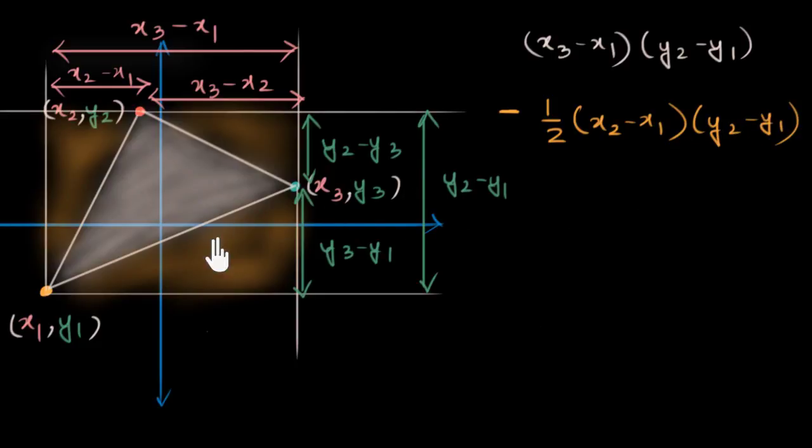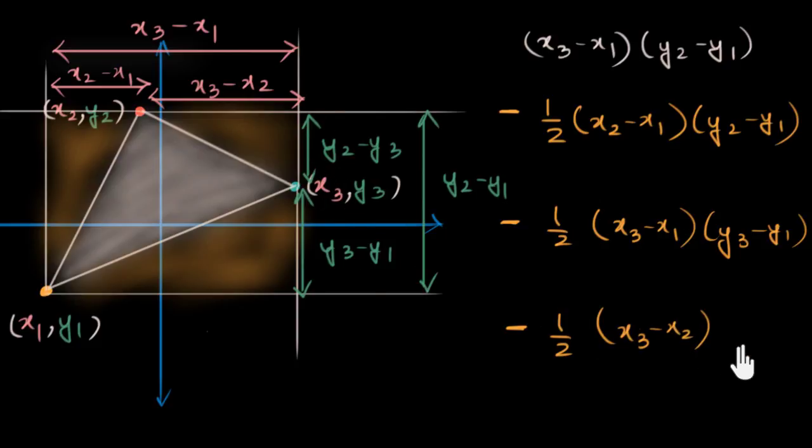And now I will subtract say this triangle. Minus half into. For this triangle the base is x3 minus x1 and the height is y3 minus y1. And finally the last triangle over here. So it's minus half into base x3 minus x2 into height y2 minus y3.